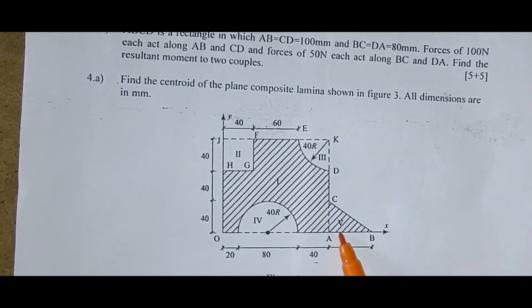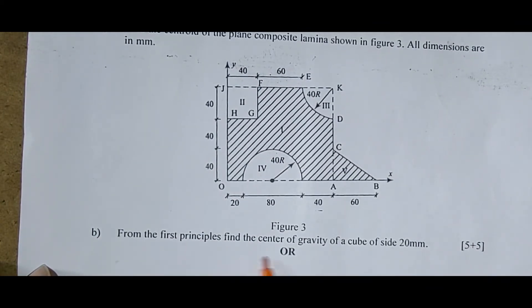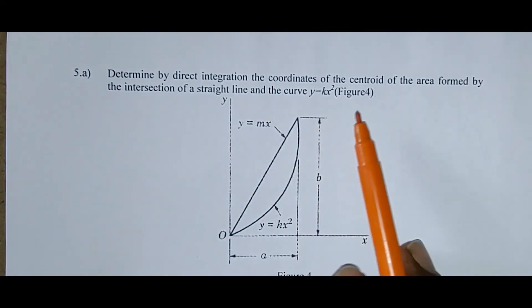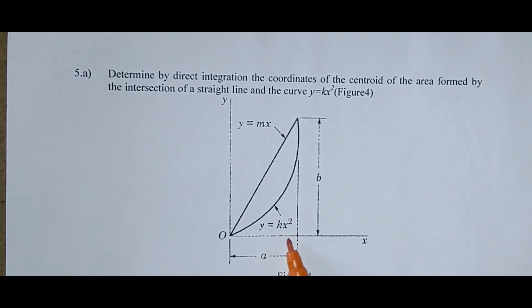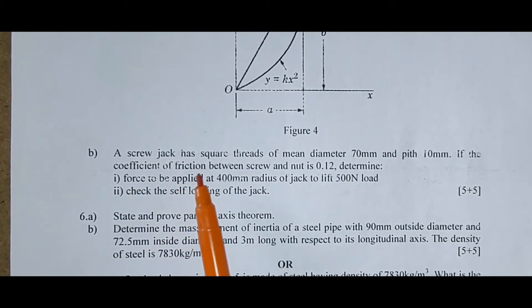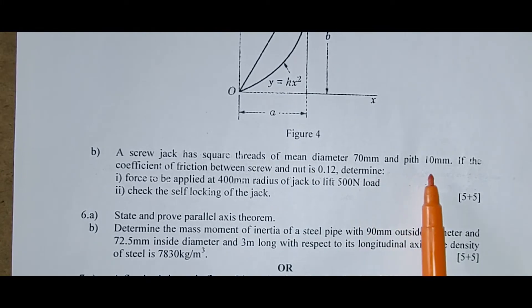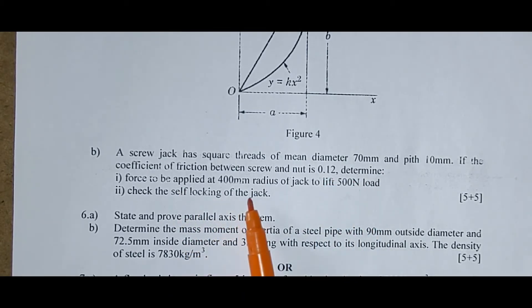This is the second, third, fourth and this is the fifth. And as per the dimensions, we have to calculate the center. Next question is, from the first principles, find the center of gravity of a cube of side 20 mm. Determine by direct integration the coordinates of the center of the area formed by the intersection of a straight line and the curve Y is equal to KX squared. A screw jack has square threads of mean diameter 70 mm and a pitch 10 mm. If the coefficient of friction between screw and nut is 0.12, determine force to be applied at 400 mm radius to jack to lift 500 N. Check the self-locking of the jack.